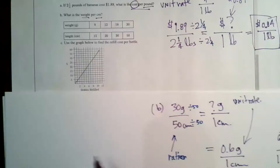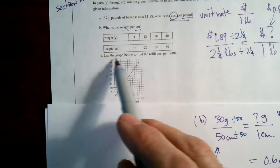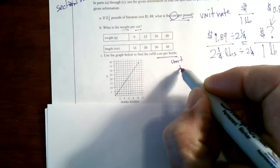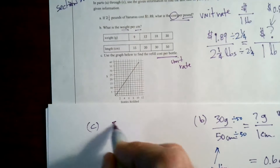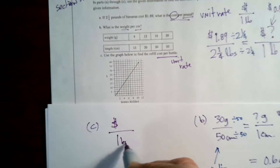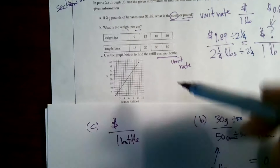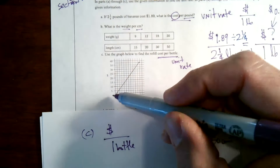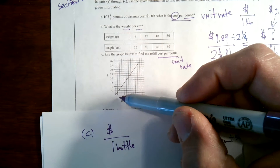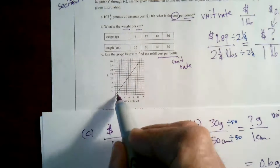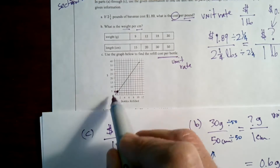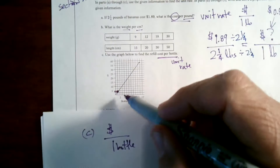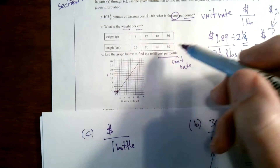For part C, we've got a graph. Given a graph, I need to find the cost per bottle — that's my unit rate. Looking at the graph, I can see that this is two bottles, so one bottle is right here. It looks like it's below $5. I can make an estimate, or if I can find an exact point on the graph.